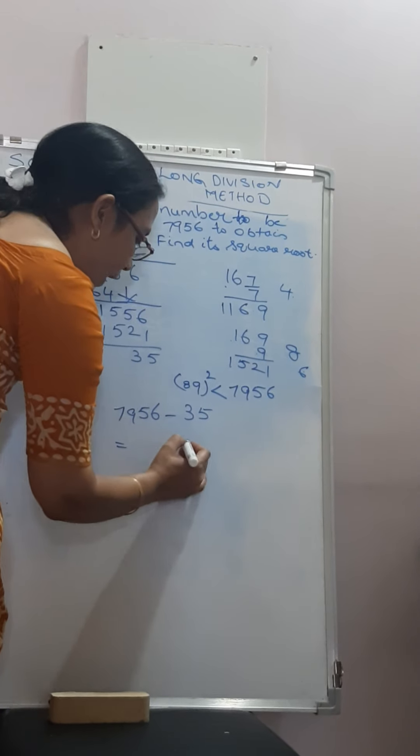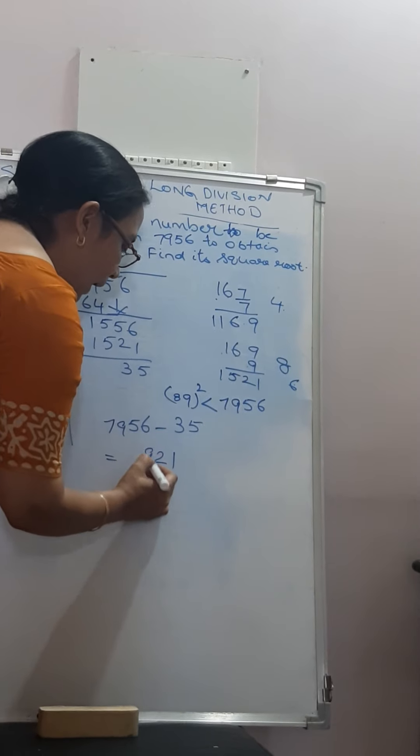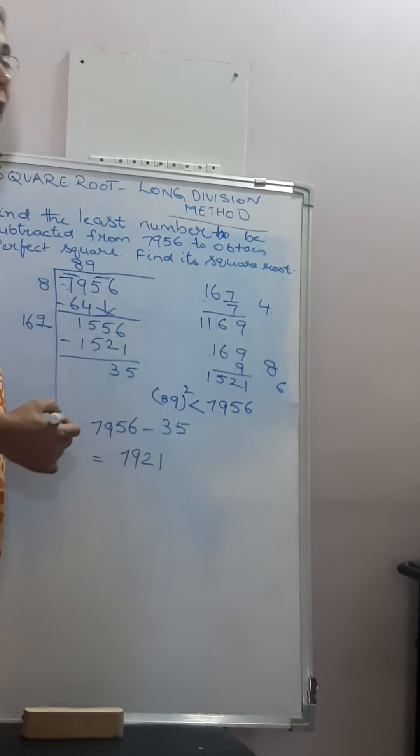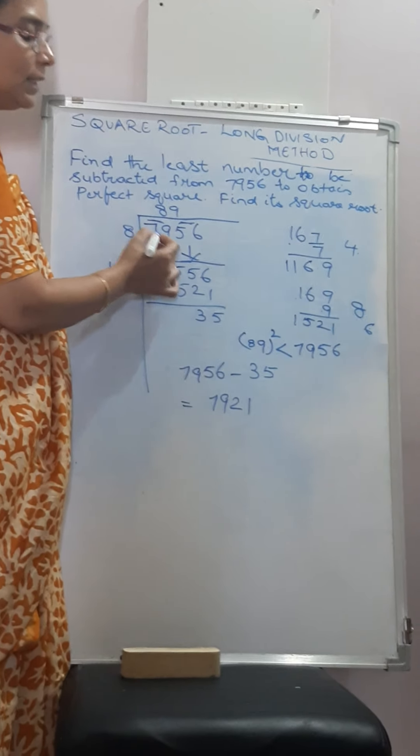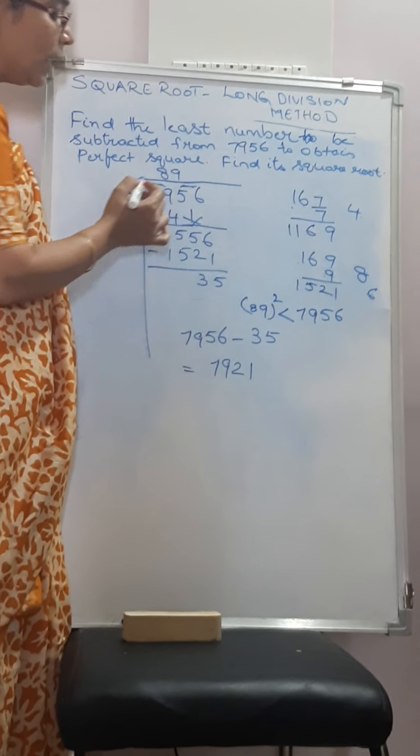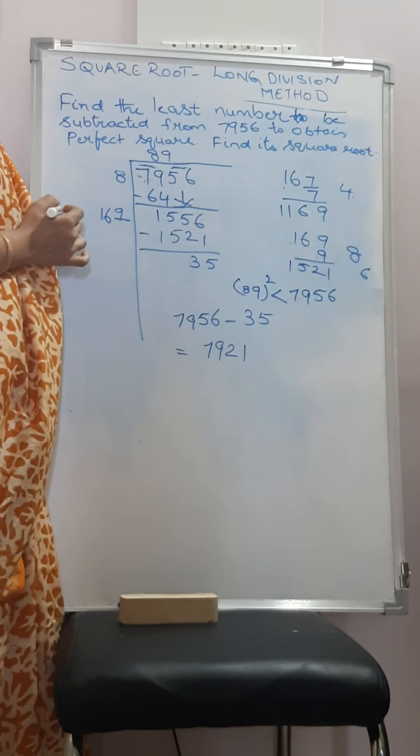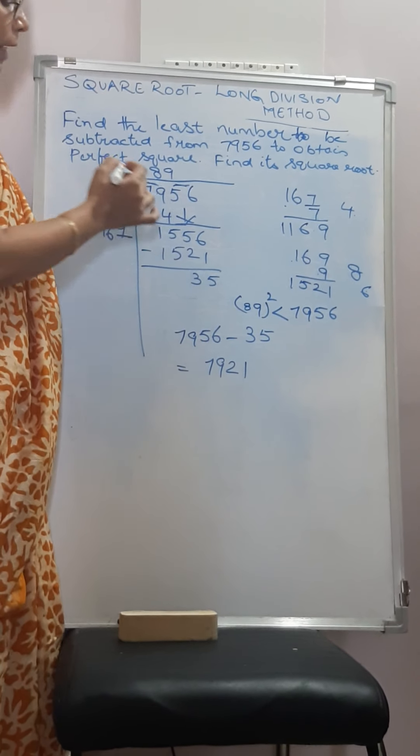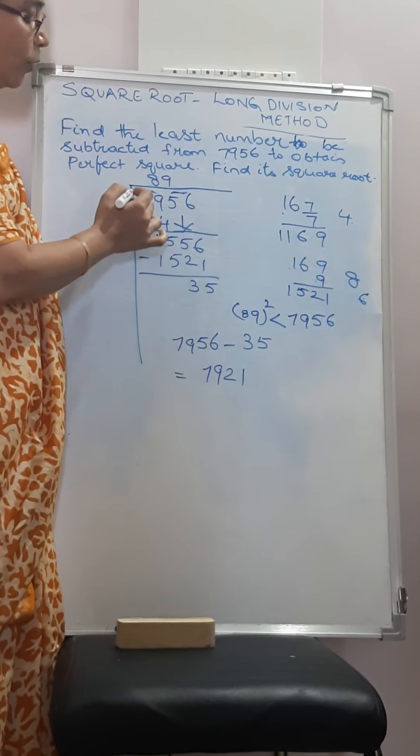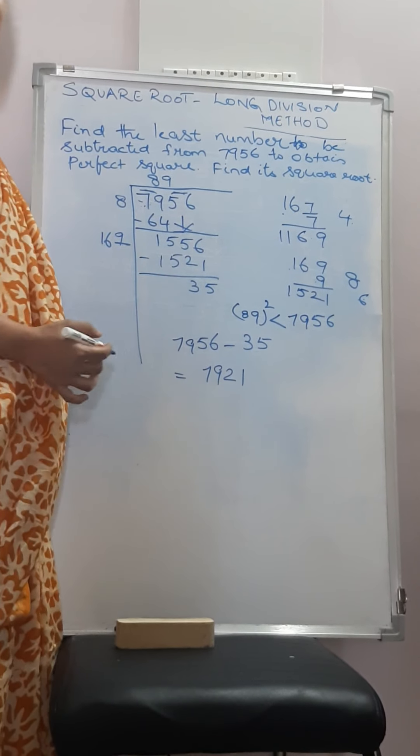6 minus 5 is 1, 5 minus 3 is 2, giving us 7921. This is the number which is going to be a perfect square and which is less than this number. The number given is not a perfect square. There will be a perfect square which will be less than this number and which will be greater than this number. The number which is a perfect square which is less than 7956 is 7921.